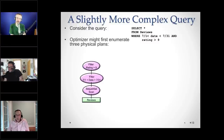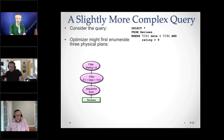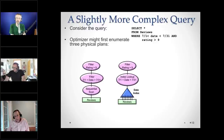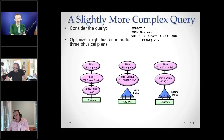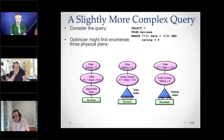Here's a slightly more complicated query. We have a 'reviews' table, and we're looking for reviews written in July for highly rated movies. There might be three physical plans. Plan one does a sequential scan, applies the date filter, then applies the rating filter. Plan two uses an index on date to figure out all reviews in that range. Plan three uses a non-clustered index on rating, where the date is the clustered primary index, and rating is the secondary non-clustered index.